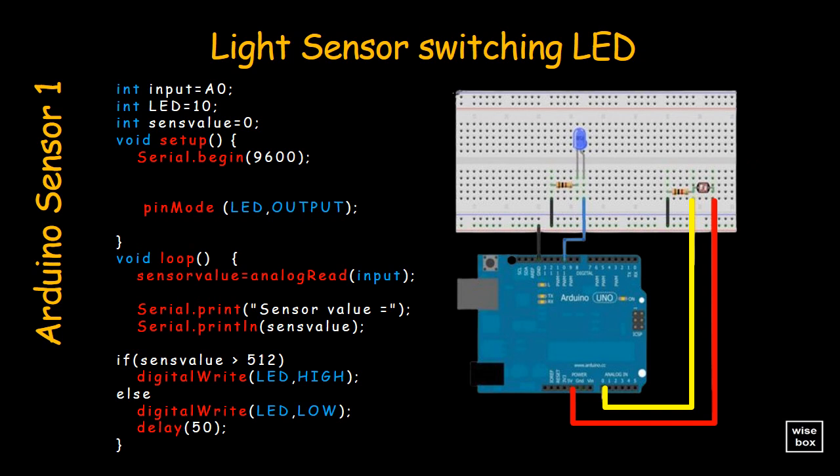Here's the code and hardware connections for a light sensor switching LED project. When there is plenty of light, the blue LED remains off. But when we cover the light sensor, the resistance goes up. If the sensor value goes beyond the threshold limit, then the LED lights up.